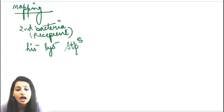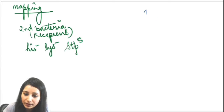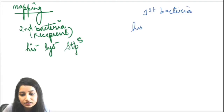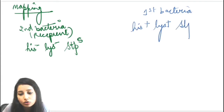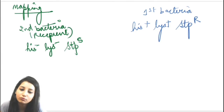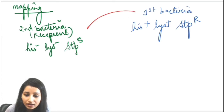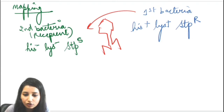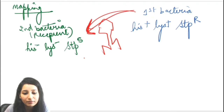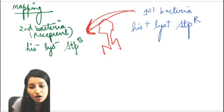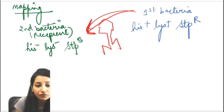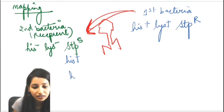Now the first bacterium has histidine-positive, lysine-positive, and streptomycin-resistance. If grown on a plate, it will grow with streptomycin present. When the bacteriophage infects this first cell, it can transfer some of its genetic material to the second bacterium. For example, if it has transferred only histidine and recombination has occurred, then in the second bacterium the condition will be: histidine-positive, lysine-negative, and streptomycin-sensitive.